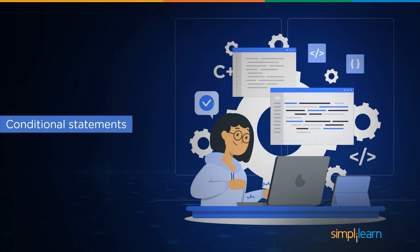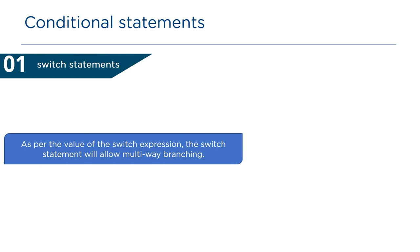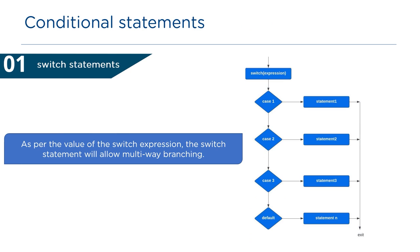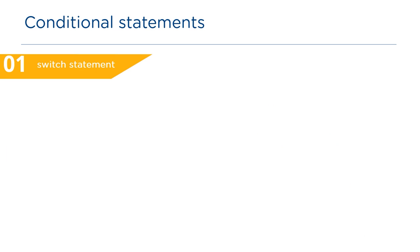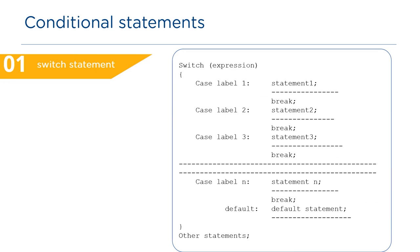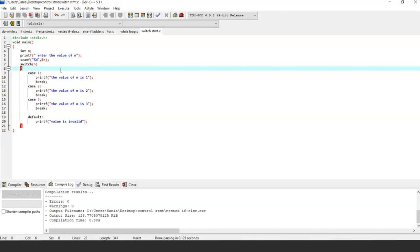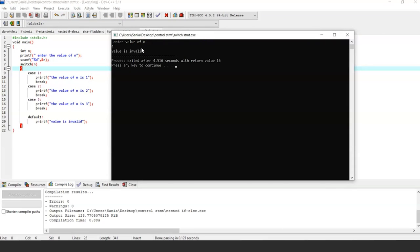Now let's look at the switch statement. As per the value of the switch expression, the switch statement allows multi-way branching. Depending on the expression, control is transferred to that particular case label and its statements are executed. If none of the cases match the switch expression, the default statement is executed. The syntax is: switch (expression) with multiple case labels and a default statement at the end. Running the program and entering 4 for n, the output is 'value is invalid' — because n does not match any case label, so the default statement is printed.